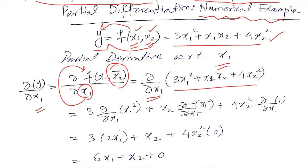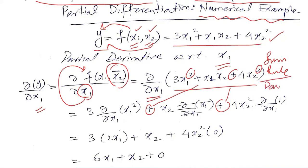Now it is time to solve it. You can see there are plus signs, so it calls for the sum rule, and there are powers, so the power rule will be applied as well. By using these two rules and any other applicable rule, we will find the answers. The only thing new here is the delta symbol instead of d, and the treatment of the other independent variable. x2 appears in the final term.